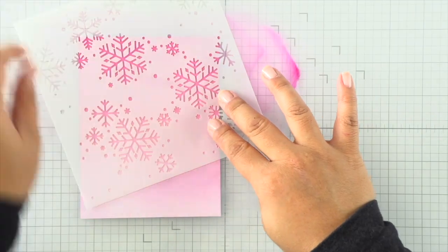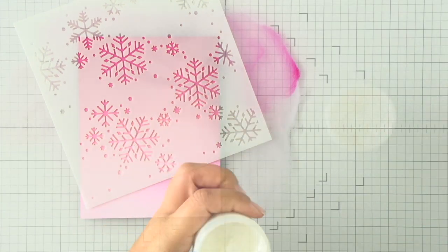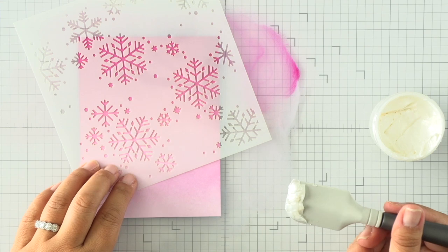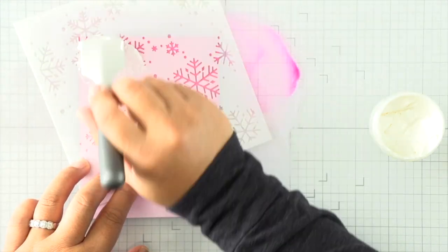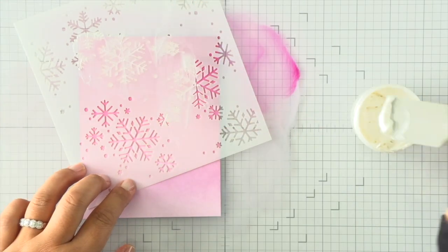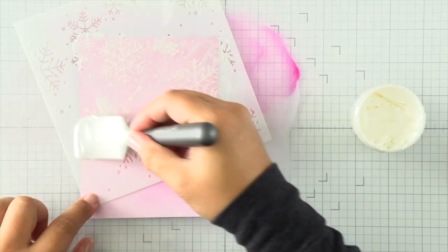I have this snowflake background stencil here. I've turned my stencil so I can get the most out of it in one pass. I'm just going to apply a nice even layer of this pearl stencil paste from Lawn Fawn using a spatula.